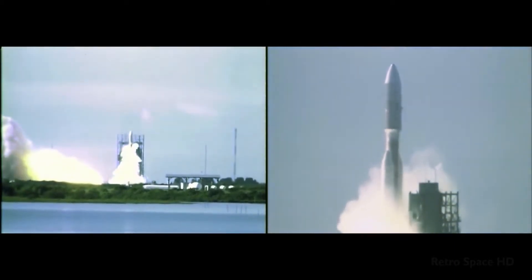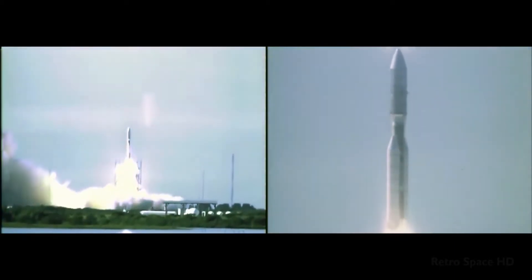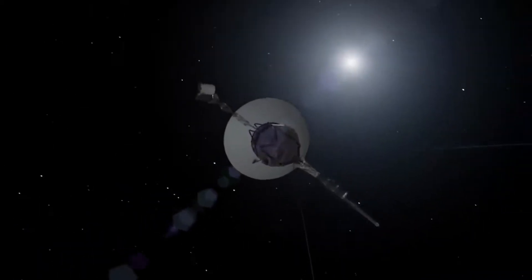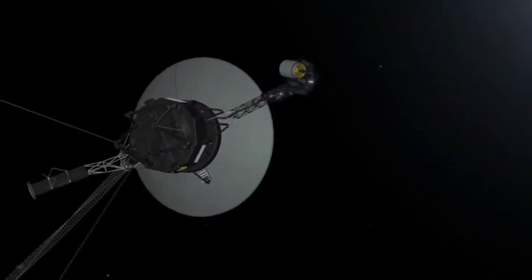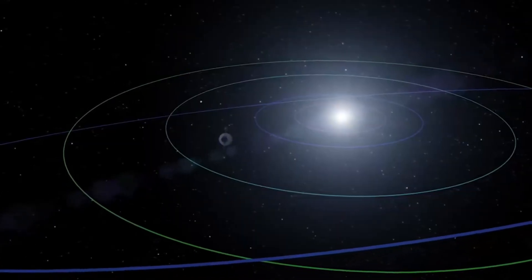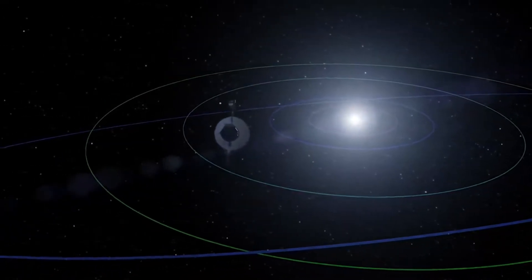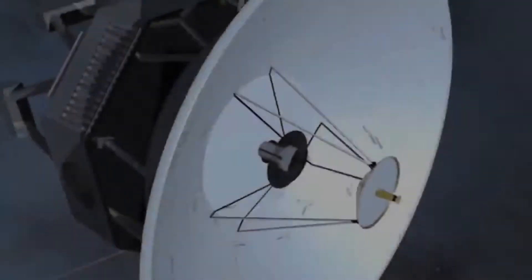The Voyager spacecraft are bound for the stars. They're on escaped trajectories from the solar system, barreling along at almost a million miles a day. The gravitational fields of Jupiter, Saturn, Uranus and Neptune have flung them at such high speeds that they've broken the bonds that once tied them to the Sun.